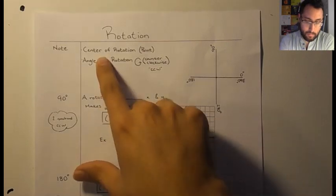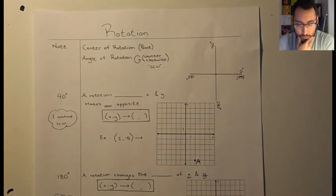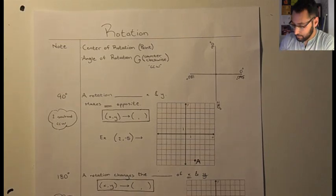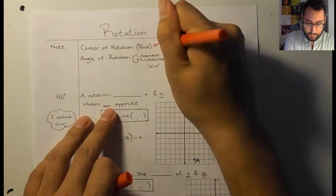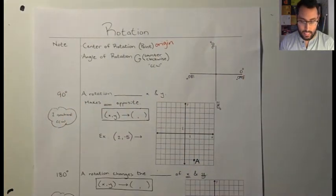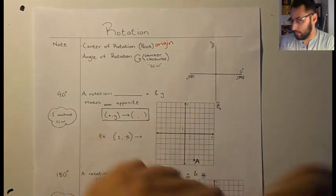This is called a point for the center of rotation. Now, for us, it's always going to be the origin. For the most part, just center rotation, just write origin next to it. That's where the x-axis meets the y-axis. Center rotation is very important.